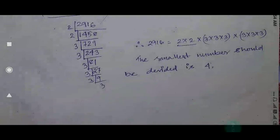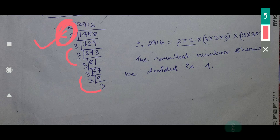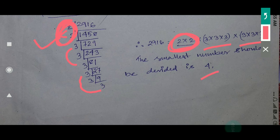For 2916, first find the factors. After finding the factors, check: 2 is multiplied two times, then three three three — so there are four 2s. To complete the cube, if you multiply by 2 it will be in triplet form, but the question asks what should be divided. The other factors are already in cube triplet form, so you have to divide by 2 to the power 1 — that means divide by 4.